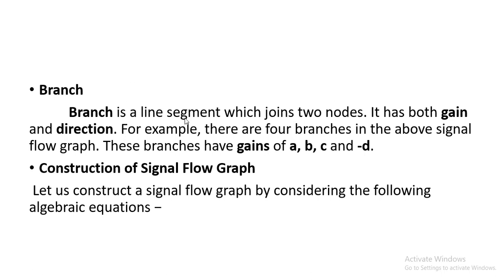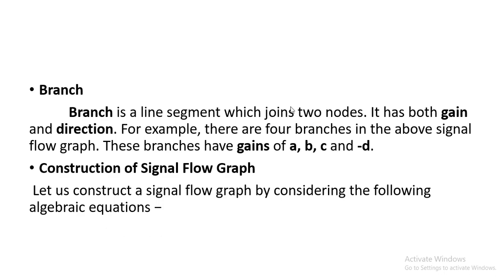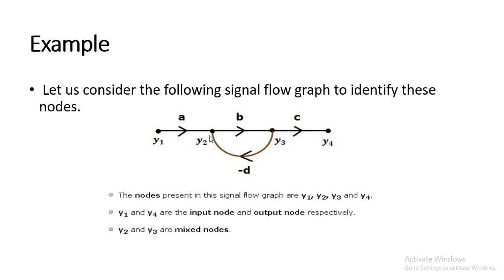A branch is a line segment which joins two nodes. The line joining y1 and y2 can be called a branch. Similarly the line joining y2 and y3 is a branch, and so on. Each branch has both a gain and a direction. The arrow on the branch shows the direction — for example, from y1 to y2.